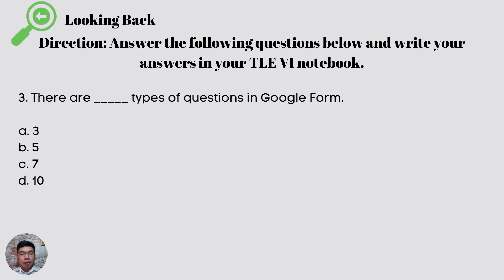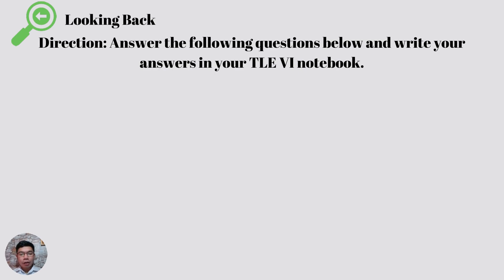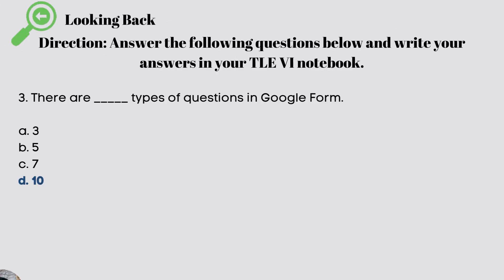Number three: there are how many types of questions in Google Forms? A — 3, B — 5, C — 7, D — 10. The correct answer is letter D, 10.